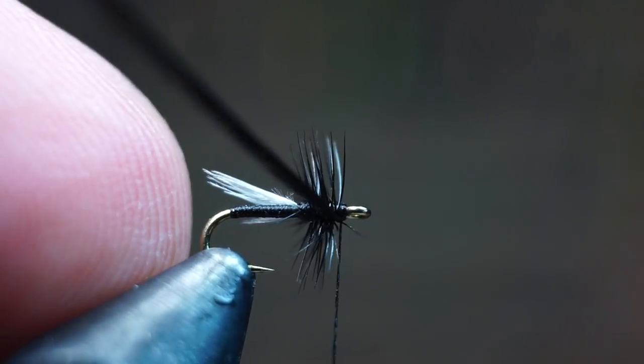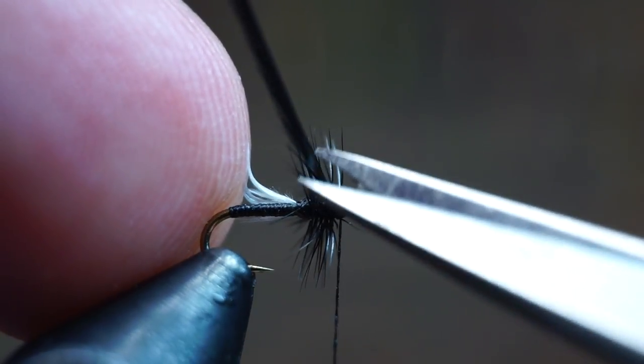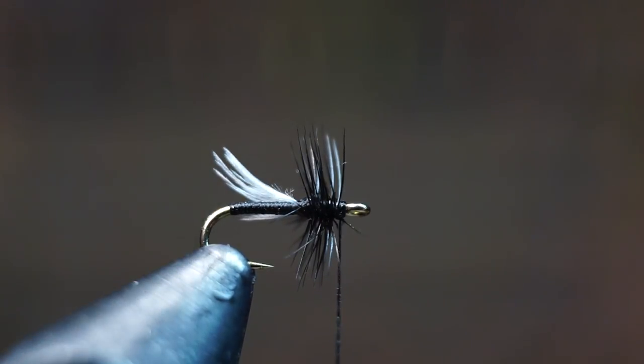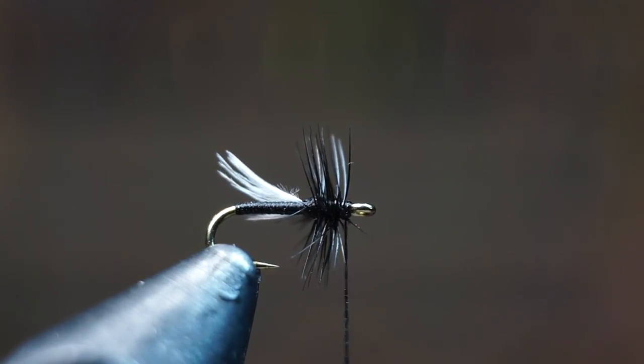When you're happy with the position of the barbs, clip off your excess hackle. Save that by the way, if it's long enough you may be able to get another fly or two out of it. Then clip off any errant fibers you may have missed.